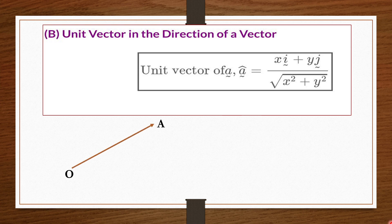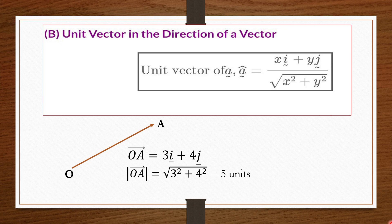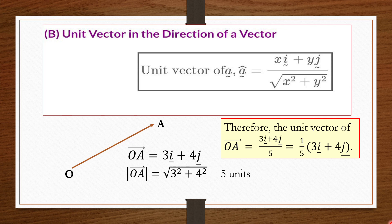For example, vector OA equals 3i plus 4j, and the magnitude of OA equals 5 units. The unit vector of OA equals (3i plus 4j) divided by 5, which can also be written as one-fifth times (3i plus 4j). A unit vector always has magnitude 1 unit.